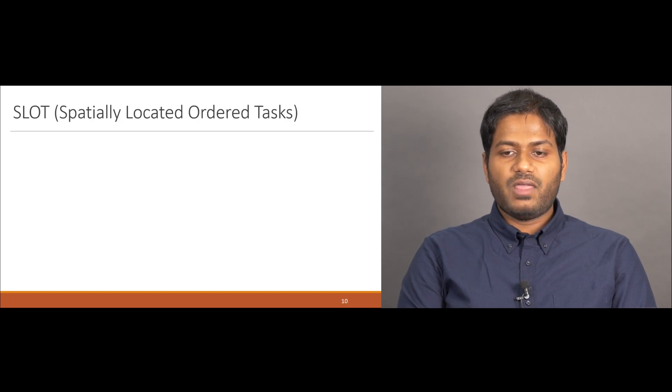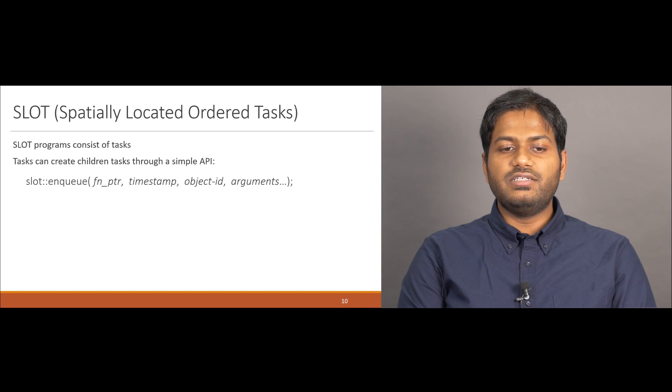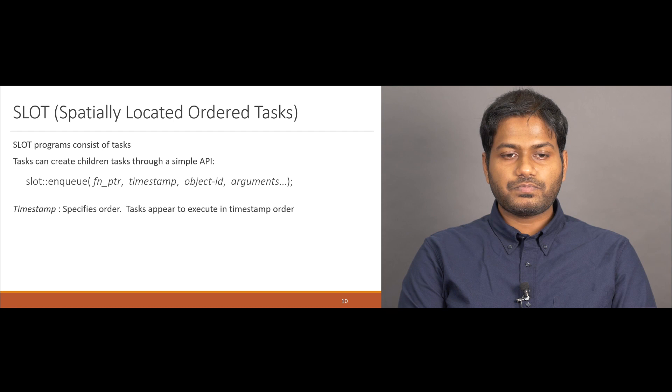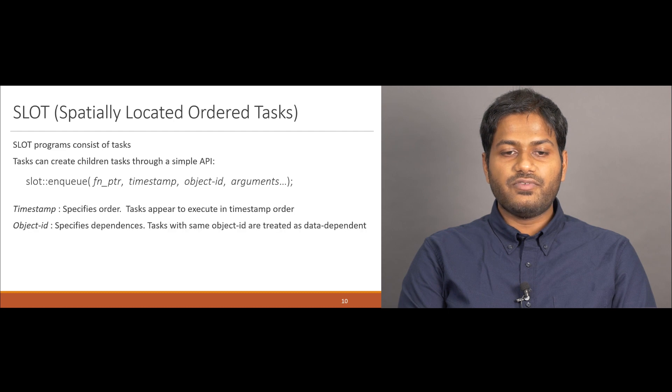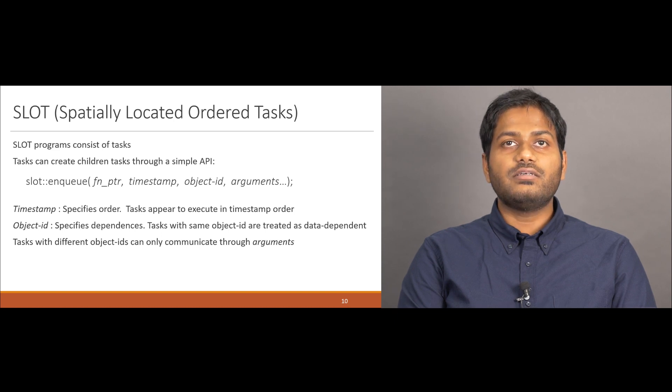Now, we are ready to introduce SLOT, which is a programming model that enforces the condition that each task can access only a single object. Formally, SLOT programs consist of tasks where each task can create children tasks through a defined interface. Creating a new task requires specifying a function pointer, a timestamp, an object ID, and zero or more additional arguments. Here, the timestamp specifies the ordering, and the object ID specifies data dependencies, where only tasks with the same object ID are treated as data dependent. Tasks with different object IDs can only communicate through additional task arguments, since this model does not support shared memory for accesses to different object IDs.